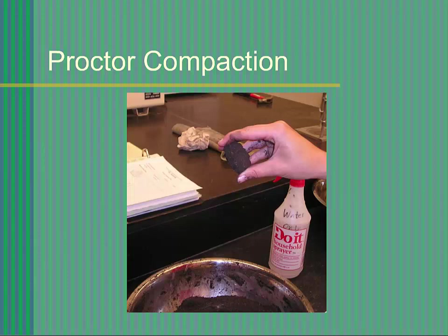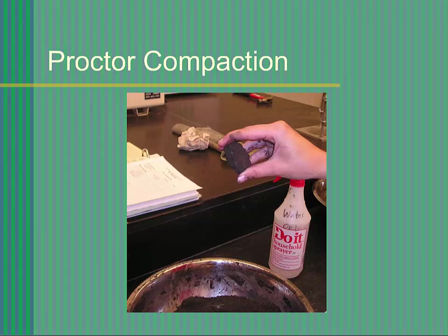Before compacting the first sample, you should attempt to identify the moisture content corresponding to the optimum condition. When the soil is at optimum moisture content, it should be possible to compact a sample of the soil the size of a golf ball using your hand. When this golf ball-sized sample is squeezed between your thumb and forefinger, it should break apart in a brittle fashion. If the sample cannot be formed into a compact ball, it is dry of optimum. If it can be formed into a compact ball but the ball deforms when squeezed rather than breaking apart, it is wet of optimum.